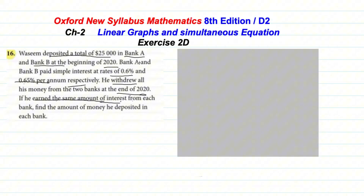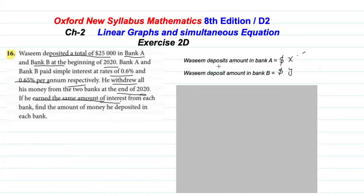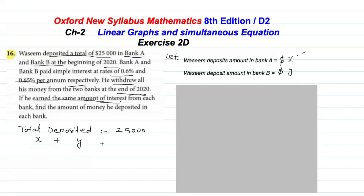Here we need to calculate the amount Waseem deposited in Bank A and Bank B. We suppose: amount deposited in Bank A = x dollars, and amount deposited in Bank B = y dollars. The total deposited amount is $25,000. So we can write: x + y = 25,000 as our first equation.